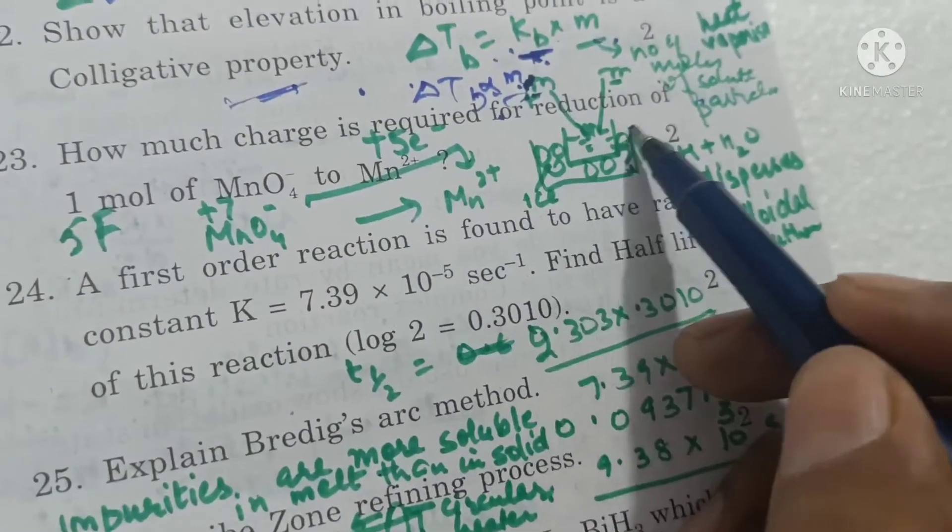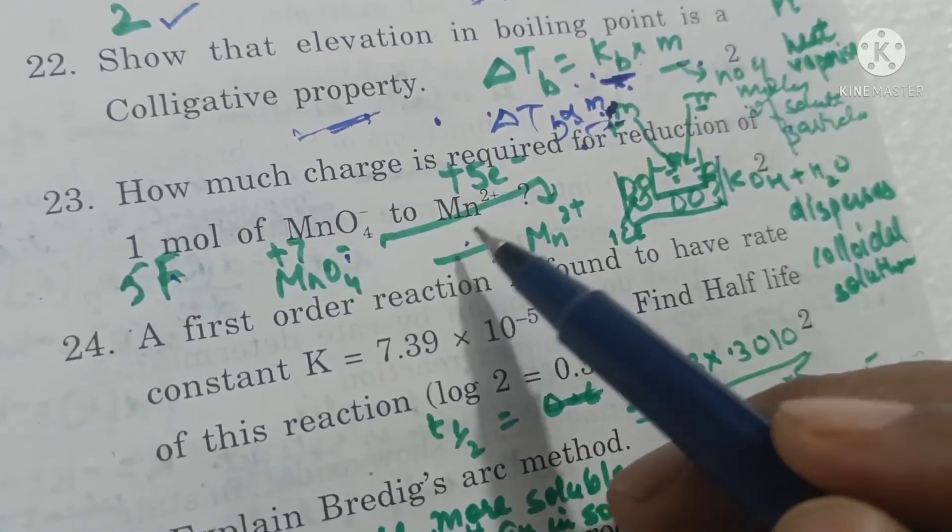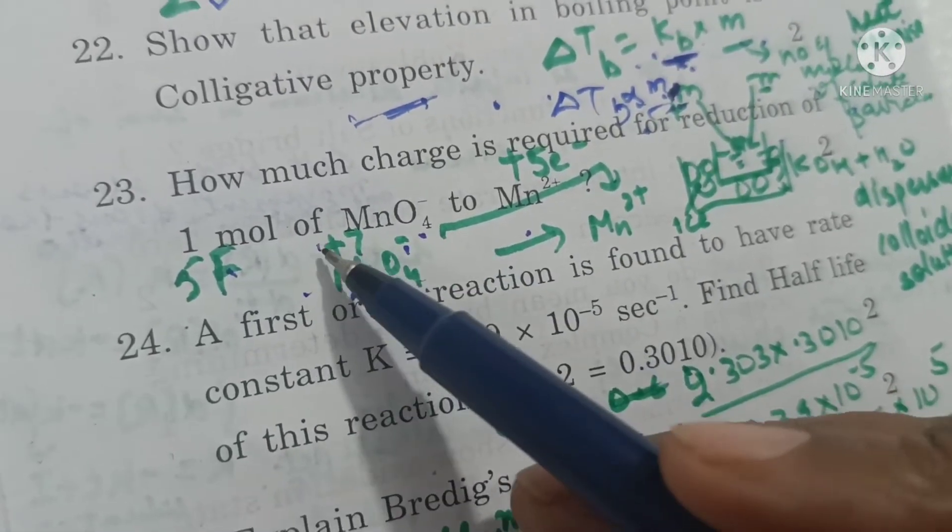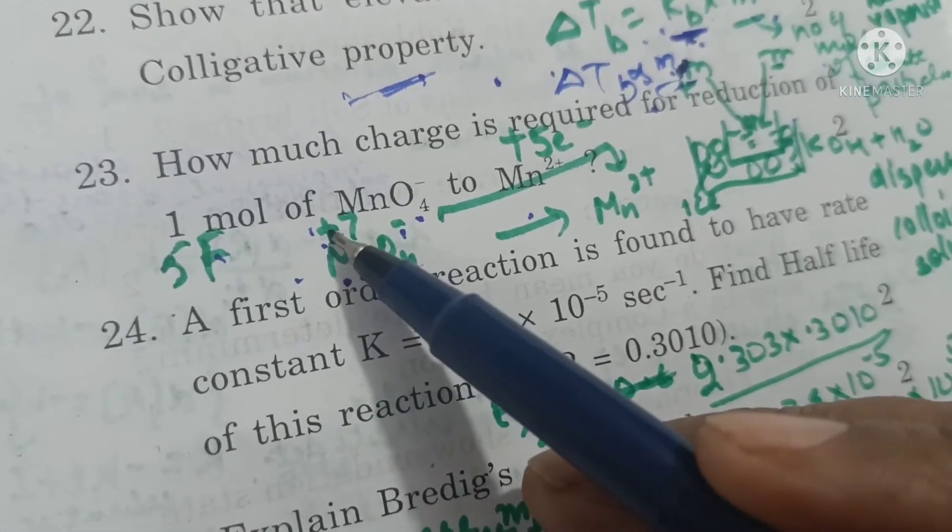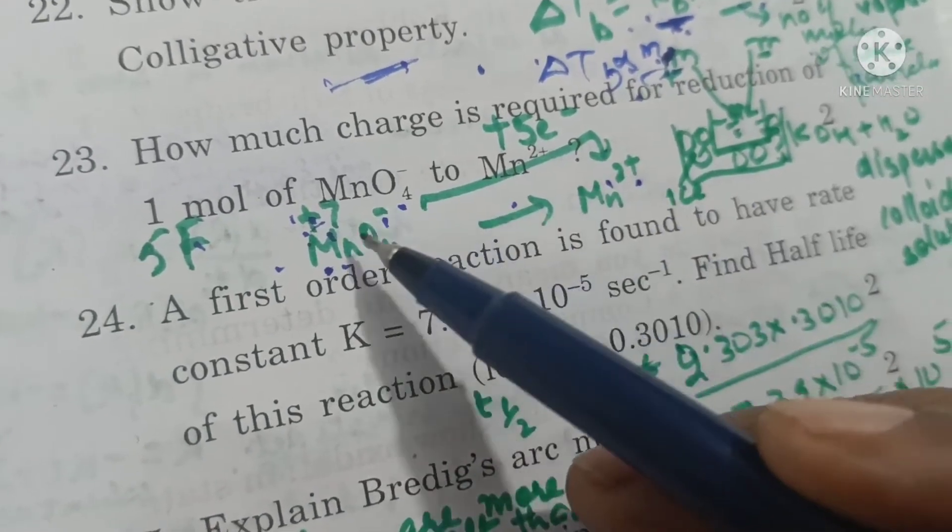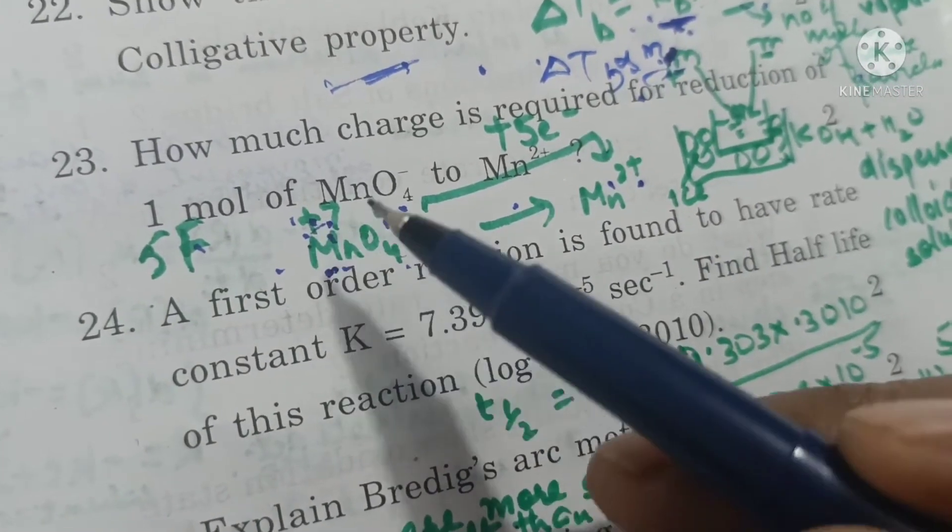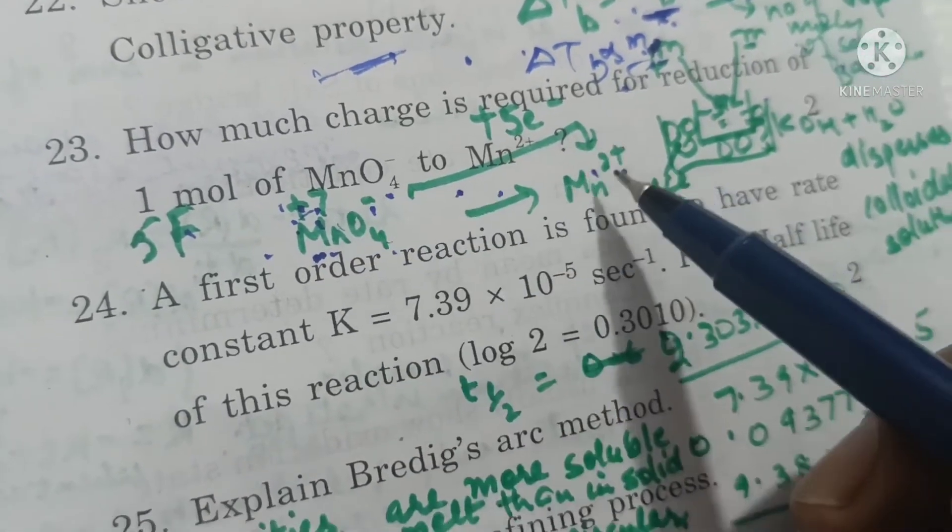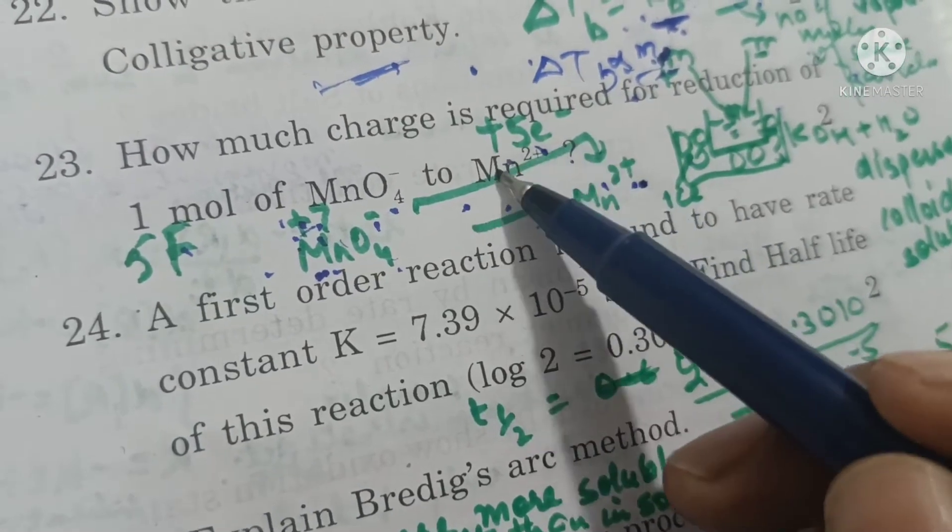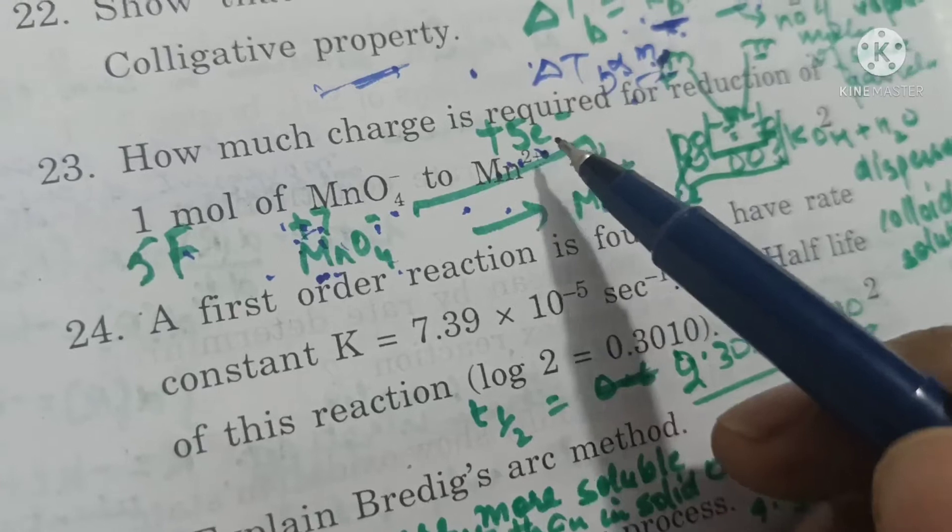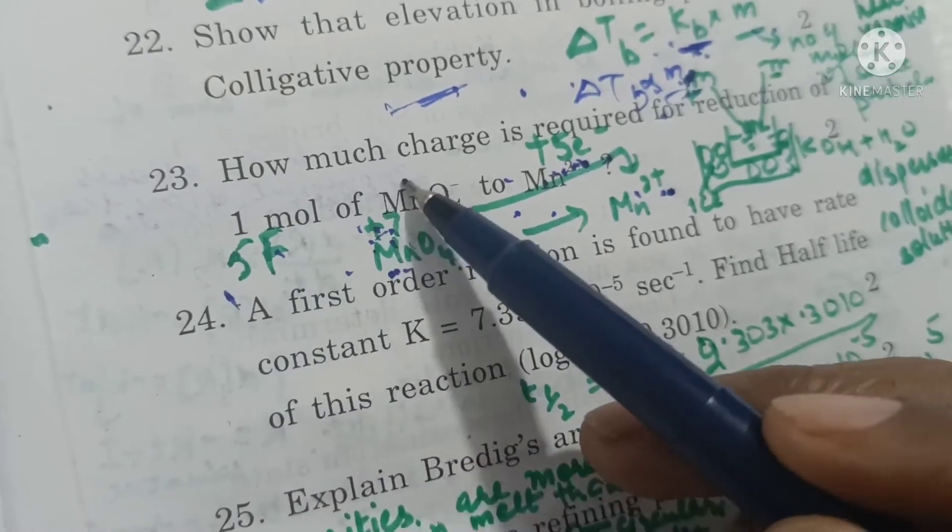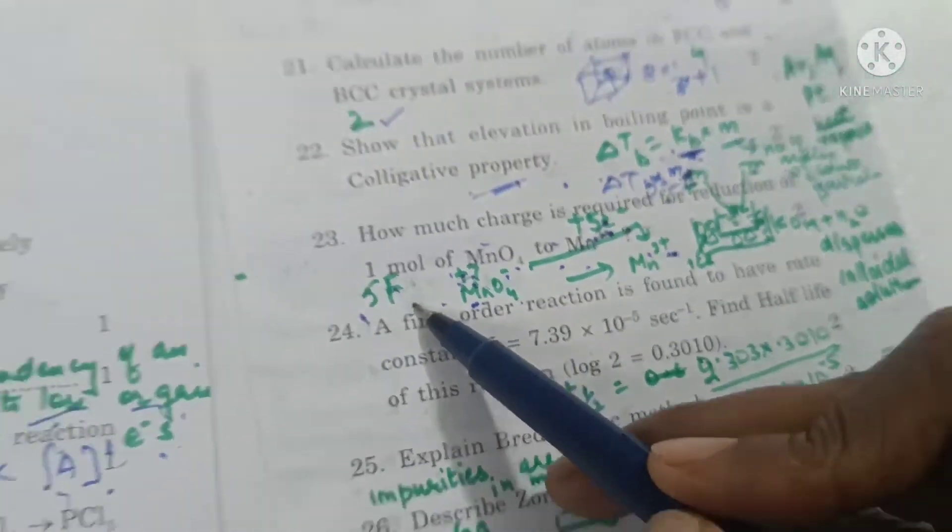How much charge is required for reduction of 1 mole of permanganate ions to manganese? In MnO4 negative, the oxidation state of manganese is plus 7, and in Mn plus 2, oxidation state is plus 2. That means manganese takes 5 electrons to get converted to plus 2 state. That means 5 moles of electrons are required. The charge carried by 1 mole is 1 Faraday, so charge carried by 5 mole of electrons will be 5 Faraday.